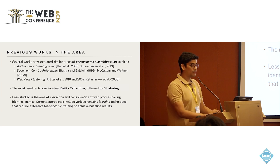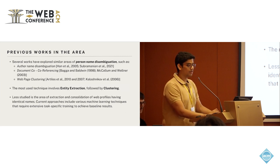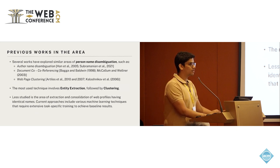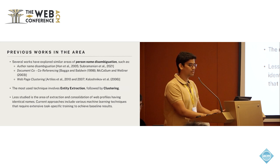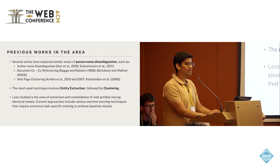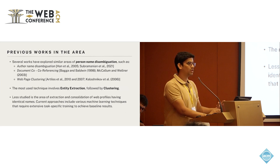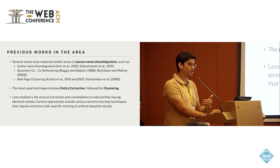The area of disambiguating person names is closely related to several other fields. One such field is author name disambiguation, which was researched previously. But that problem is relatively easier, since author names also come with other relevant information such as titles, co-author names, and area of work. So we know a little more about authors than about other people in general, making that problem a little easier.